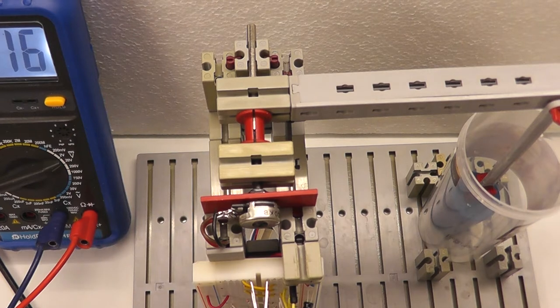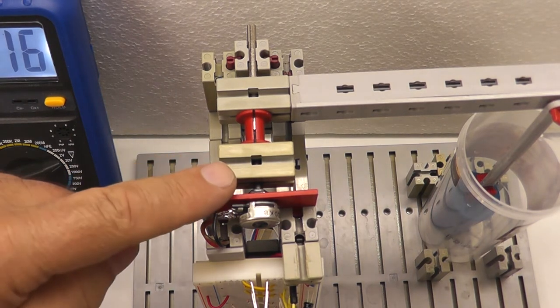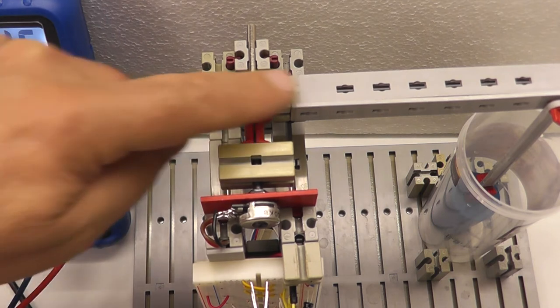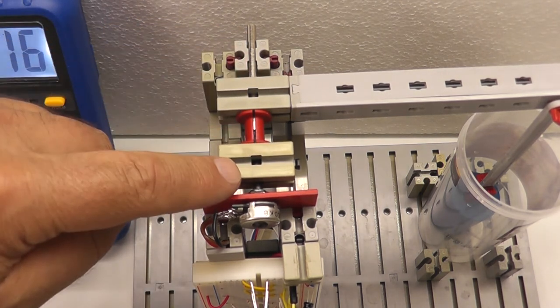You see now here the setup from the top view. What I did first is I assembled this arm to the axis of the potentiometer.